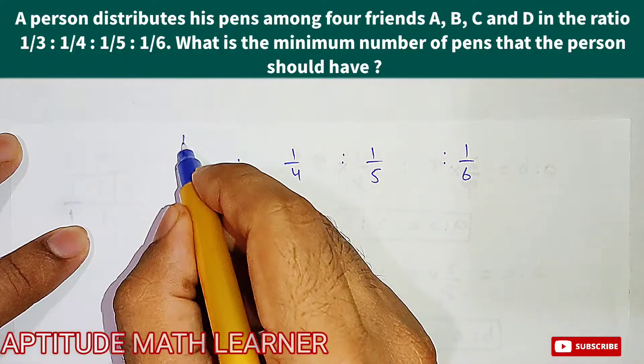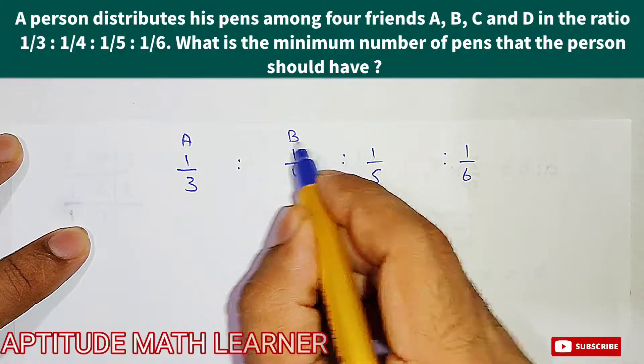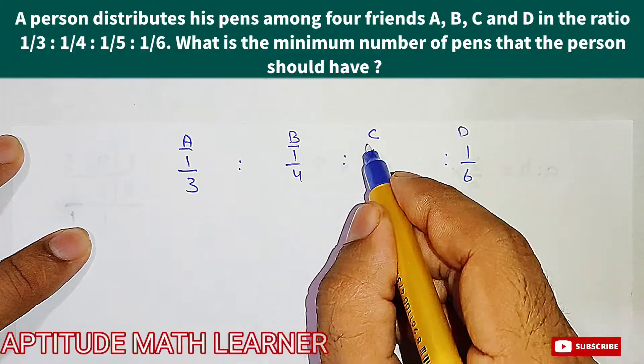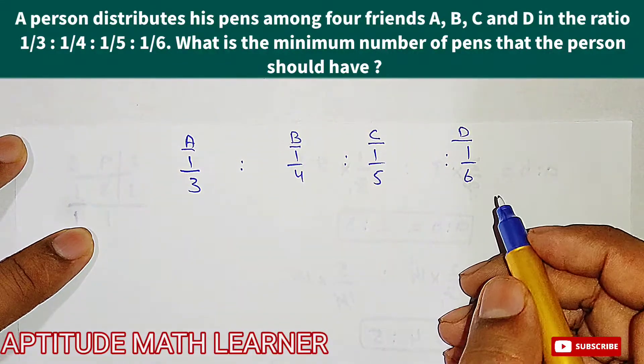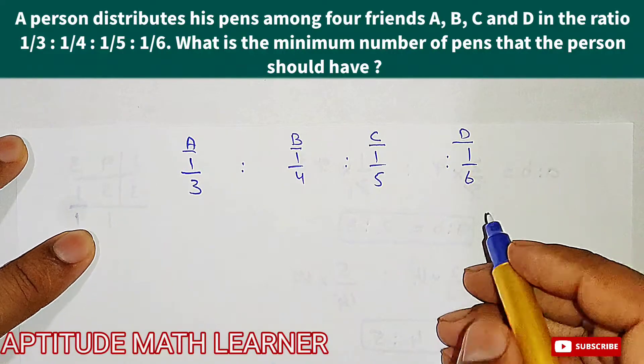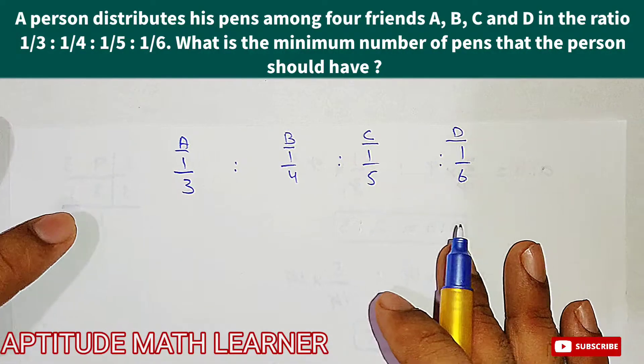These ratios have been distributed among A, B, C, and D - these are the four persons among which the pens have been distributed. To solve this and take out the ratios, the first thing we have to do is take out the LCM.